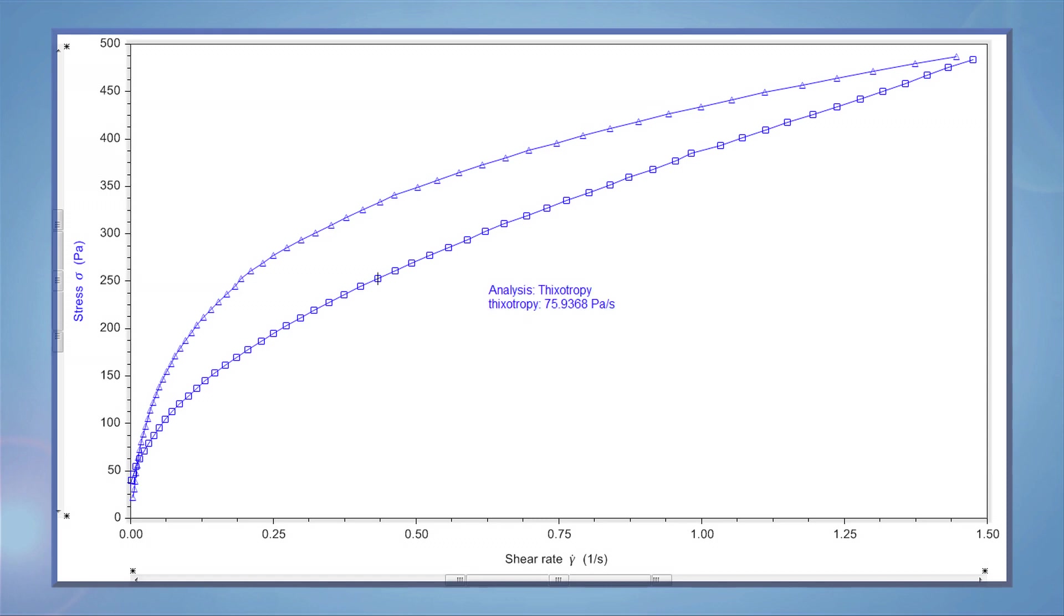The bigger the lag between the up and down ramp, the more thixotropic the material. The area between the two curves can then be reported as a thixotropic index.